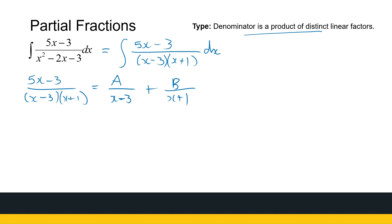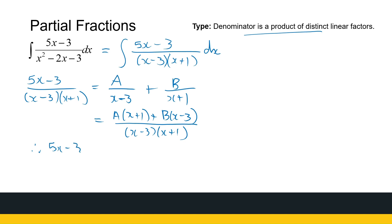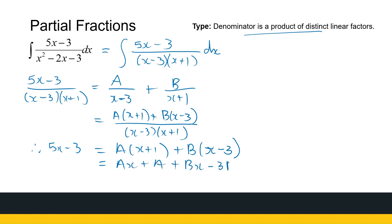We saw in the first video how to go from the right-hand side to the left-hand side. Now we need to solve for A and B. Writing the right-hand side over the common denominator (x minus 3)(x plus 1), the numerator becomes A times (x plus 1) plus B times (x minus 3). Comparing numerators, we get: 5x minus 3 equals A(x plus 1) plus B(x minus 3), which expands to Ax plus A plus Bx minus 3B, grouping as x(A plus B) plus (A minus 3B). The longest way to solve this is simultaneous equations: A plus B equals 5, and A minus 3B equals minus 3.